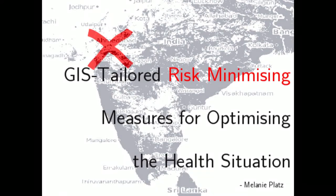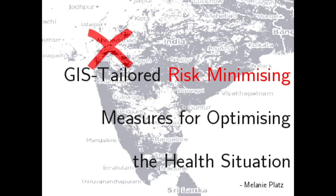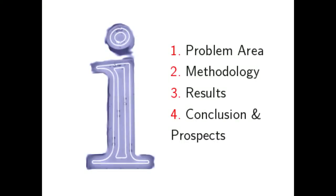Welcome to my presentation on Geographic Information System Tailored Risk Minimizing Measures for Optimizing the Health Situation. My name is Melanie Platz and I am a Research Assistant at the University of Koblenz-Landau, Campus Landau, Institute of Mathematics. I am working on the usage of mathematical modeling for the mathematical optimization of spatial public health, including the use of adaptive GUI design for digital devices tailored to different user groups for early warning and decision support.